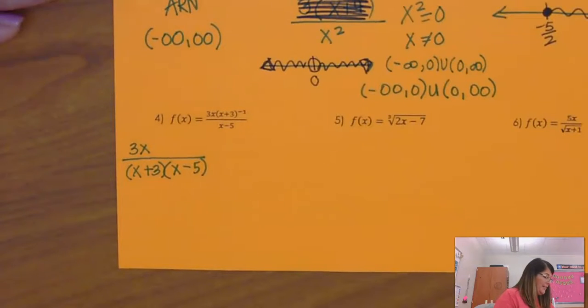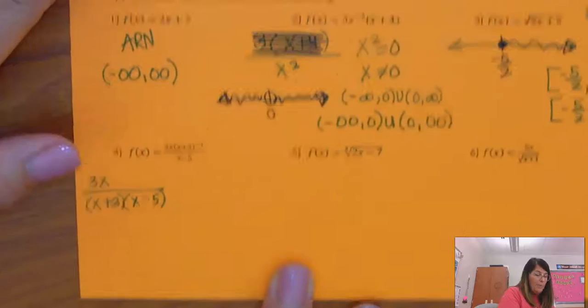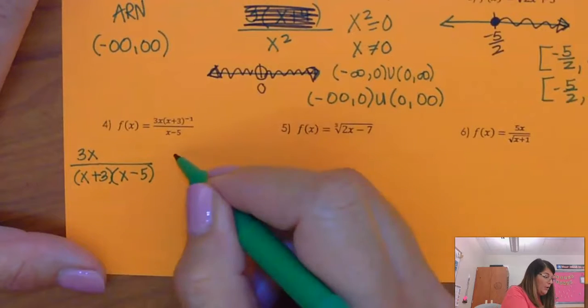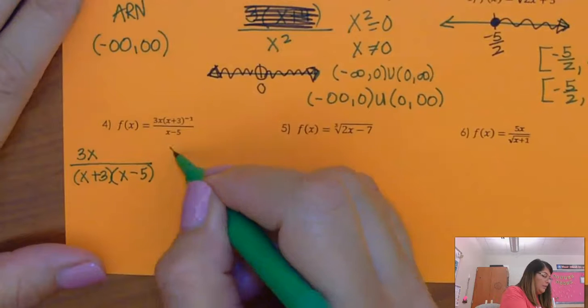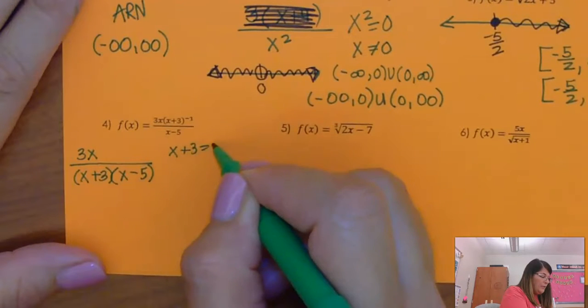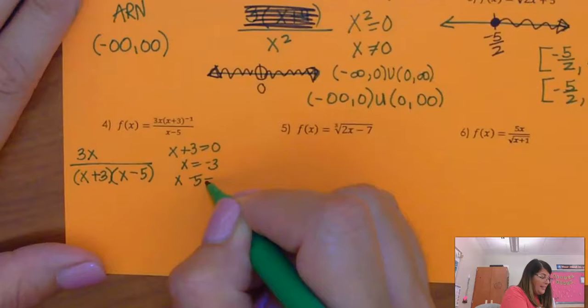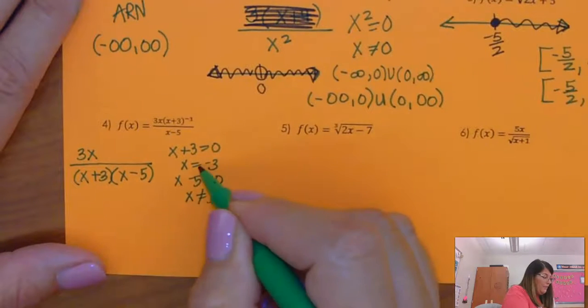Now I look for my sins. There's not a radical, but there is a fraction. So I'm going to go, okay, the junk in the denominator can't be equal to 0. So if two things are multiplied by each other in the parentheses, you set each of those equal to 0. So x plus 3 is 0. So x can't be negative 3. x minus 5 equals 0. So x can't be equal to 5.